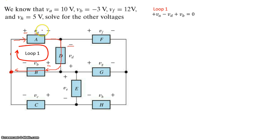The loop one expression is plus VA minus VD plus VB equals zero. We know the values of VA and VB, so we can calculate VD as seven volts.